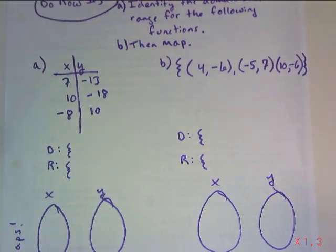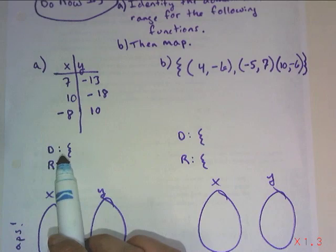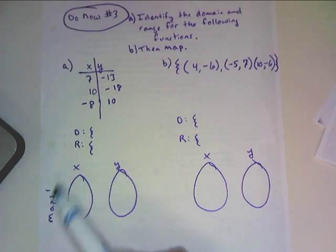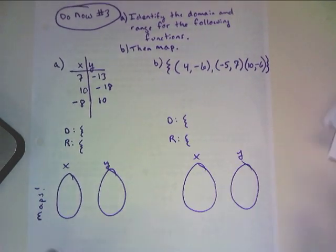So when we write the domain in the range, you're going to put it in set notation, which is those little braces. And then your maps, we kind of helped you set it up also. It's going to be ovals with the x and the y. So go ahead and try that, and then we'll talk.